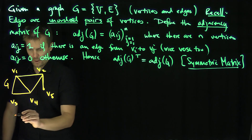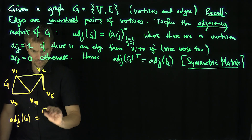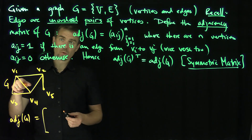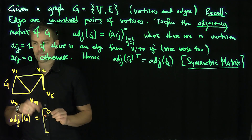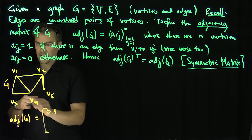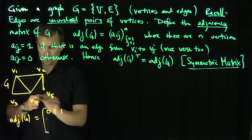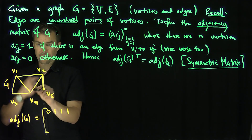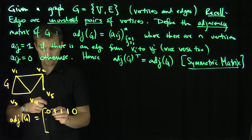The adjacency matrix of G: does 1 connect to 1? There's no loop at 1, so that's 0. Does 1 connect to 2? Yes — that's 1. Does 1 connect to 3? Yes — that's 1. Does 1 connect to 4? Yes — that's 1. Does 1 connect to 5? There's no edge between 1 and 5, so that gets a 0.